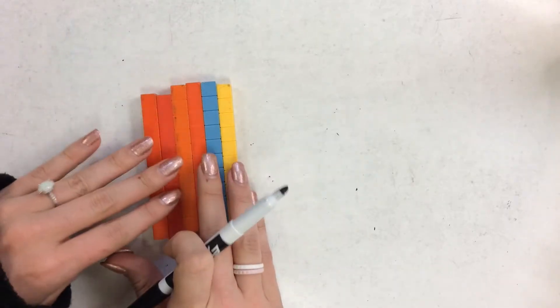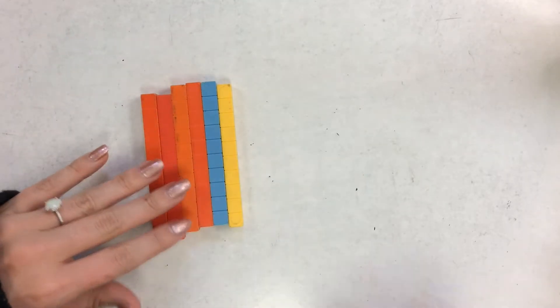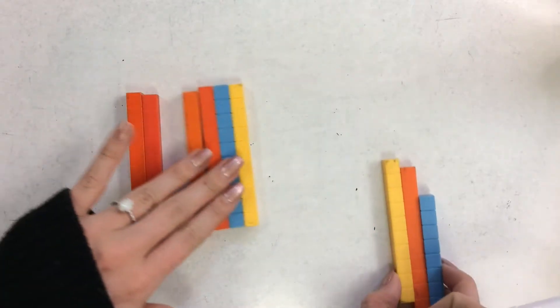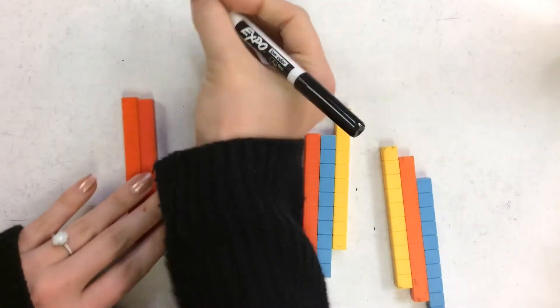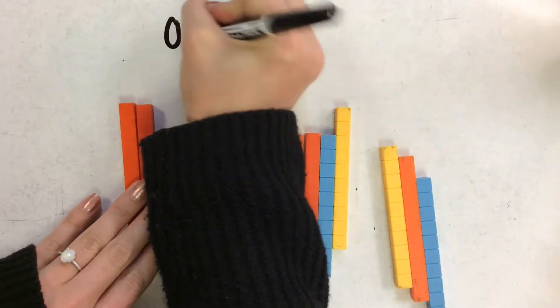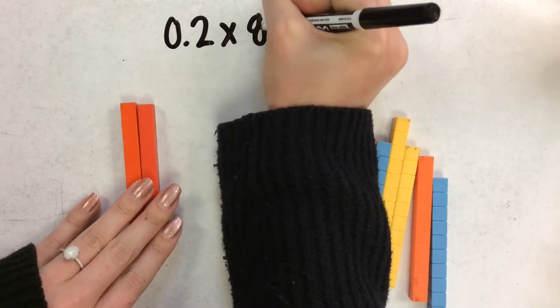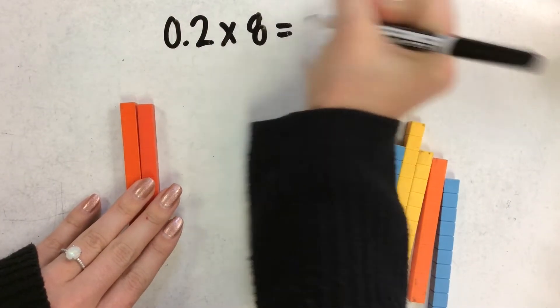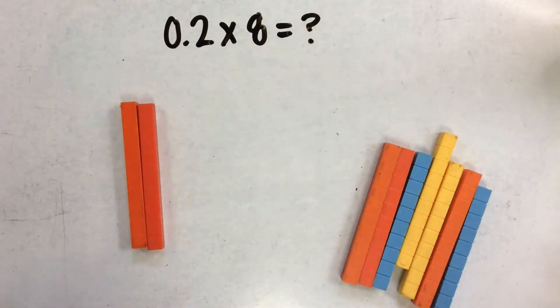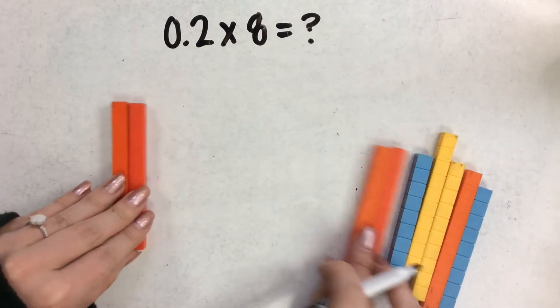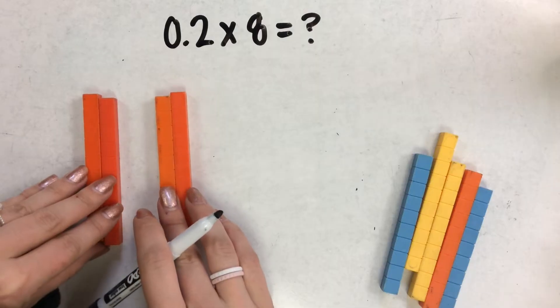We can use base ten blocks to represent multiplication problems. I'm going to use the multiplication problem two tenths times eight. So I'm going to use two tenths and make eight groups.